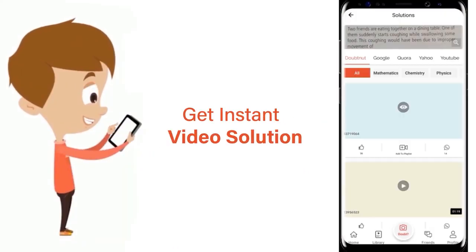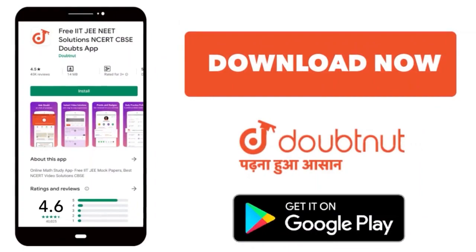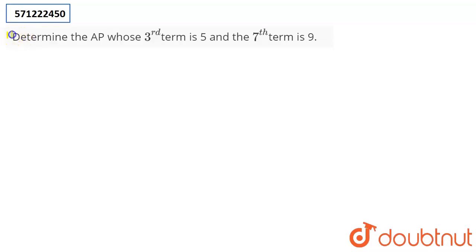Hello guys, today we have to determine the AP whose 3rd term is 5 and whose 7th term is 9. Before we begin solving this problem, you must be aware what an AP looks like.